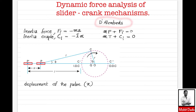If we consider equilibrium conditions of mechanisms including inertia effects, we can use D'Alembert's principle. The equilibrium equations become: sigma F plus Fi equals zero, and sigma torque plus Ci equals zero. Using these equilibrium conditions, you can analyze the slider crank or four bar mechanism using either graphical or analytical methods.